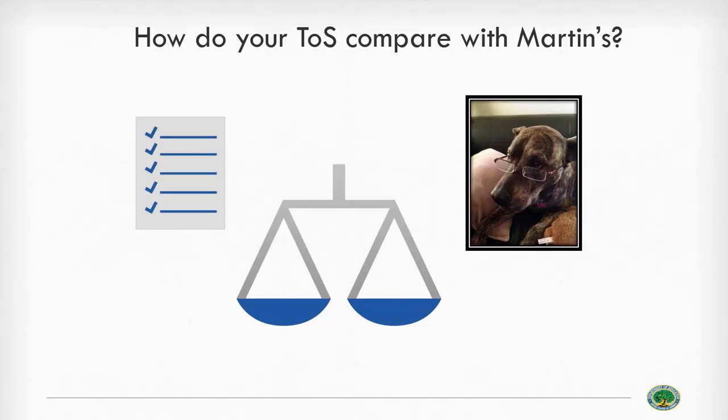If you're a vendor, how do your company's terms of service compare with Martin's? Hopefully you're more on the good dog end of the spectrum. If you are a school or a district, use these as examples. It's not that any of the bad dog provisions would necessarily violate the law, but they raise red flags and are things you need to be concerned about. Every terms of service agreement will be slightly different — you'll likely never find ones using these exact wordings — but these are the types of things to look for. We have resources on our website providing additional provision examples on both the good and bad side.